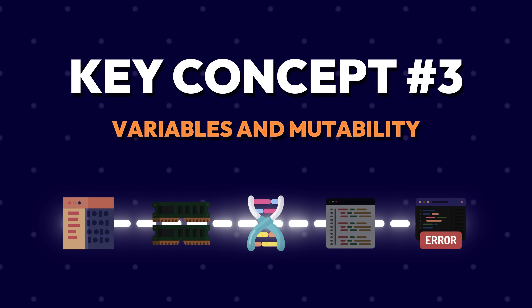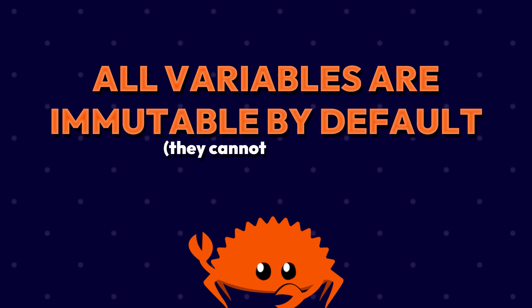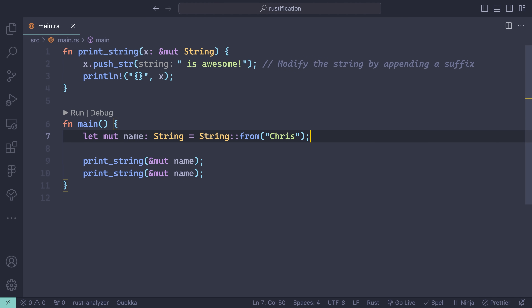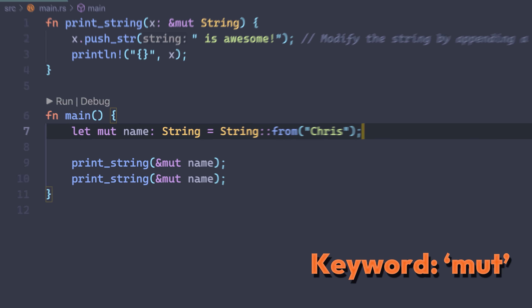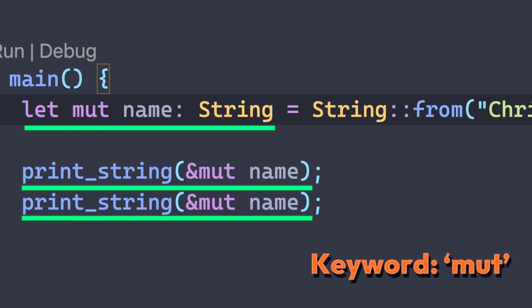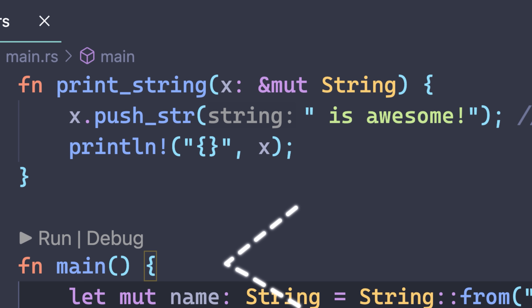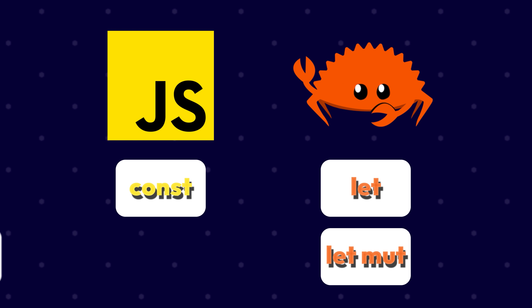This brings us to variables and mutability. In Rust, all variables are immutable by default — they cannot be changed. To mutate a variable, you have to explicitly mark it as mutable with the mut keyword. So for instance, if you wanted to pass a mutable reference to name, you'd add mut and now the reference is mutable, meaning that printString can change the value while it's borrowing it. In practice, let by itself works like const in JavaScript, while let mut works like let in JavaScript. Since Rust is explicit, it's easy to tell whether or not something can be mutated — it's not dependent on the type, it's whether it has that mut keyword.